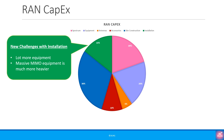This brings us to installation. This traditionally includes not just installing the equipment on the tower, but also planning the RF coverage etc. With 5G there is now a lot more equipment that needs to be installed, and Massive MIMO equipment is much heavier so it needs a lot more manpower, which increases the cost significantly.